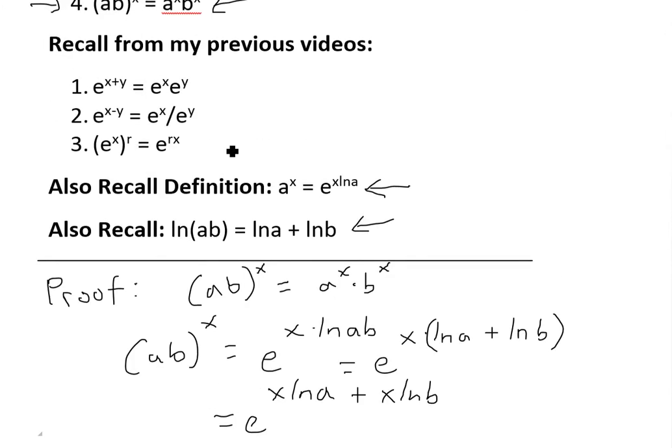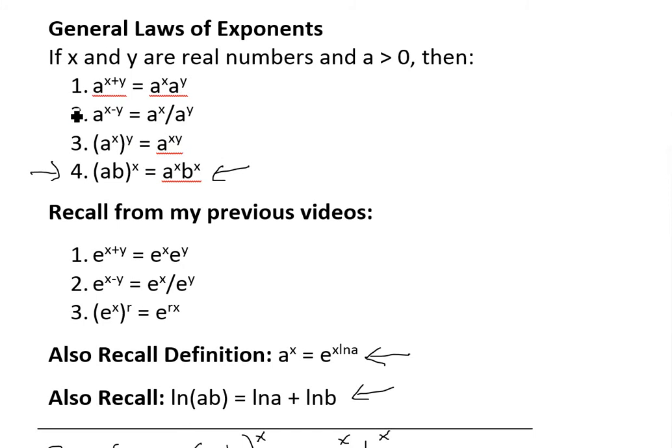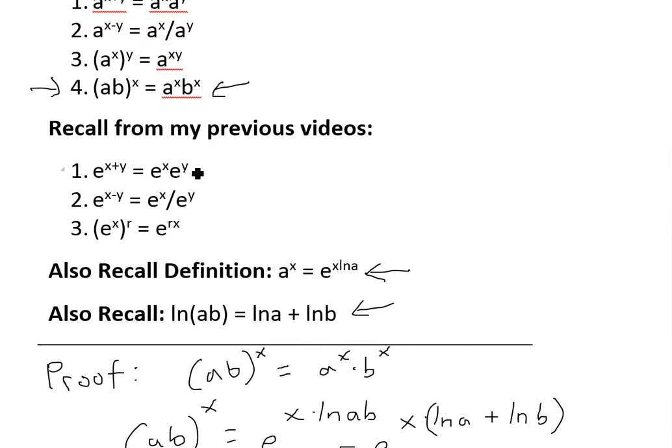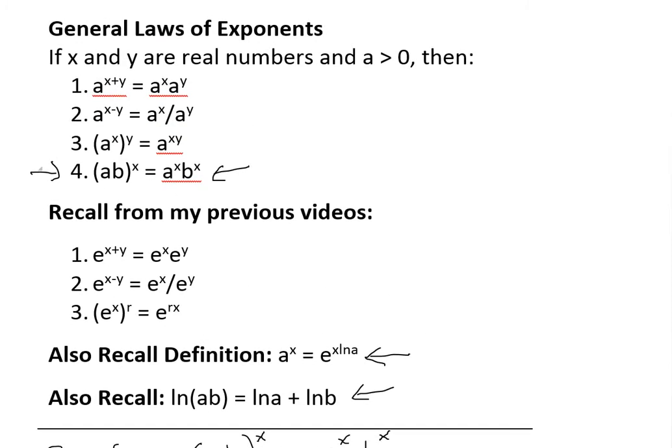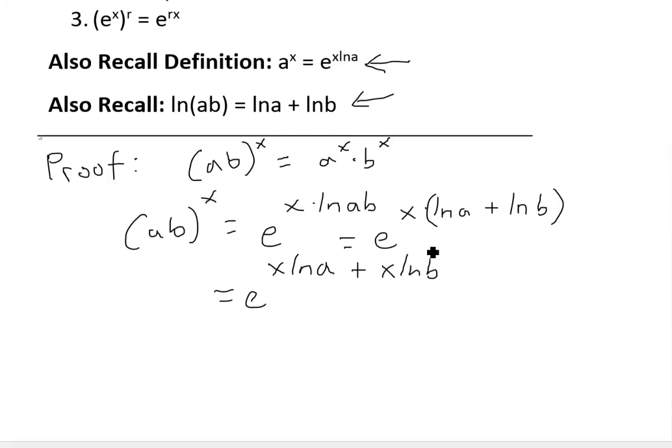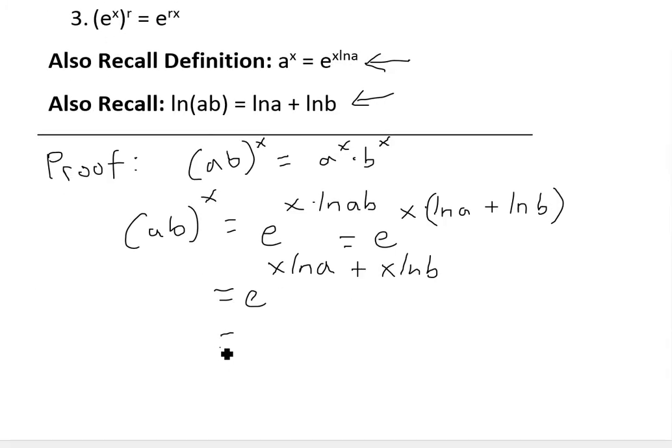e to the power of x plus y equals e to the x times e to the y. We could also use the first one, it's the exact same thing. This is just a general law for a, anything greater than zero. This is just specific for e, but since e is a real number greater than zero, it works. So we could write this one out as e to the power of x ln a times e to the x ln b.